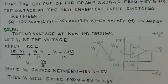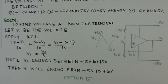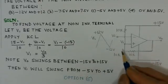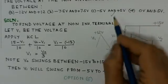So then that means since the swing is here minus 15 to 15, the swing of V1 would be from minus 5 to plus 5 volts.